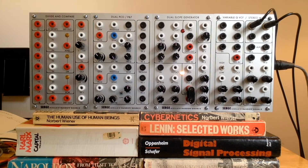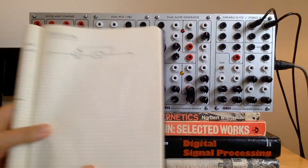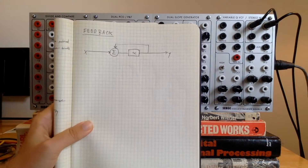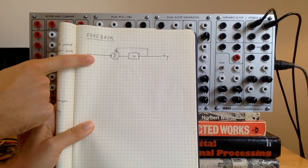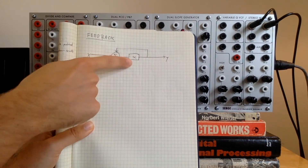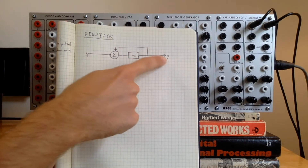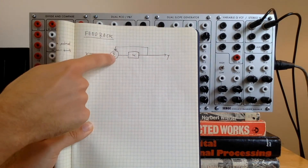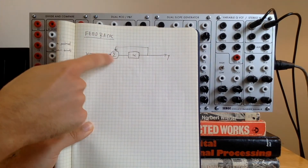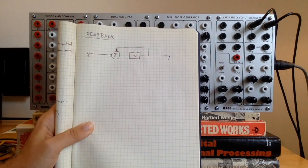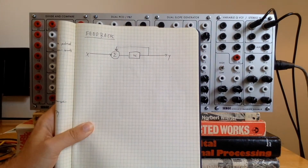Any time it deviates, it pulls the temperature in the right direction. Basic feedback looks like this: you have an input x into some sort of system alpha, and you have an output y, and that output comes back and is mixed with the input and sent through the system again.